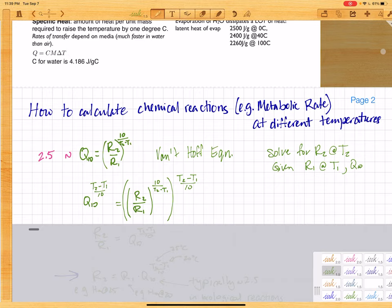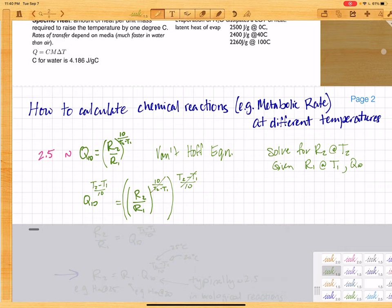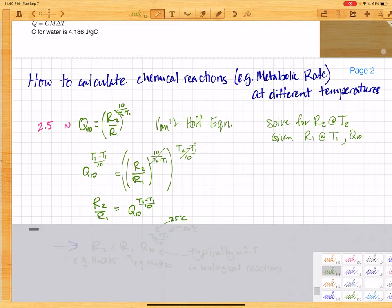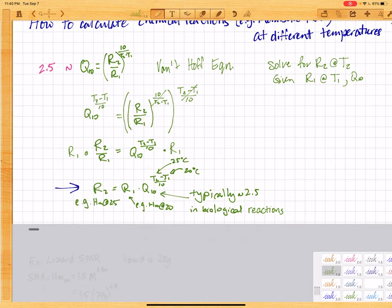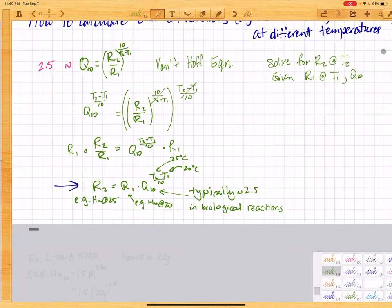Back to our solution. So then the exponent cancels here, and then we have R2 over R1 equals Q10 to the T2 minus T1 over 10 power. So now if we just multiply both sides by R1 and rearrange, we get the solution: R2 equals R1 times Q10 raised to the T2 minus T1 over 10 power.